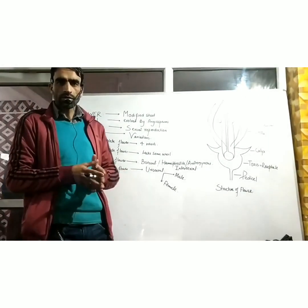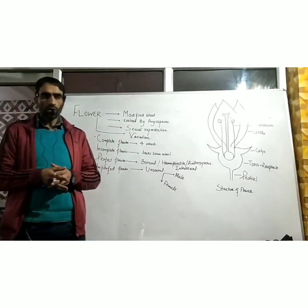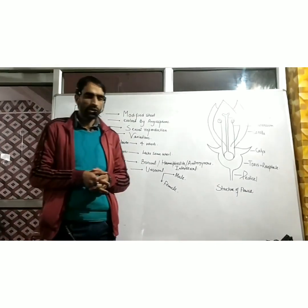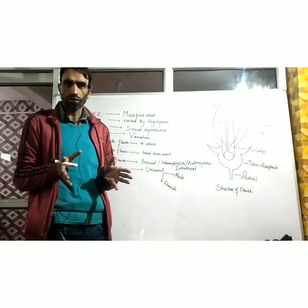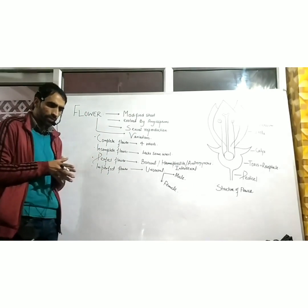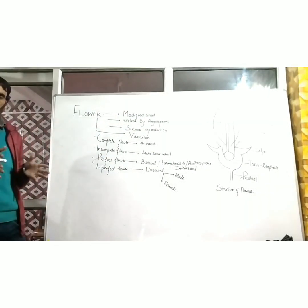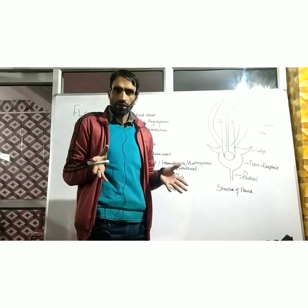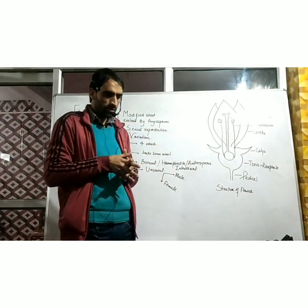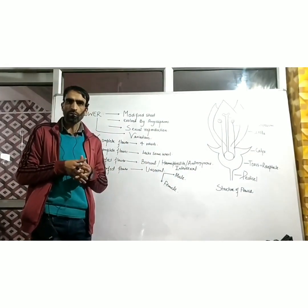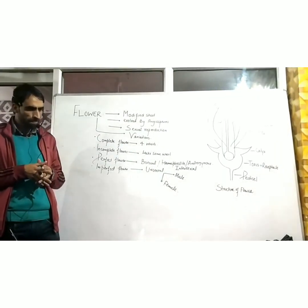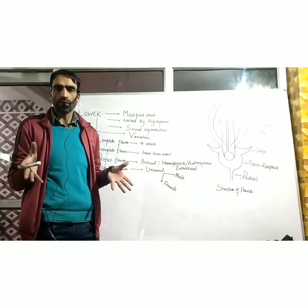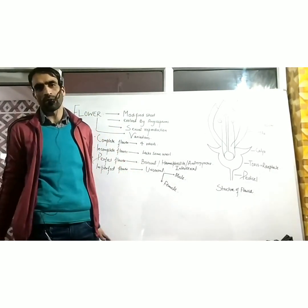Dear students, our normal class topic was reproduction in angiosperms. We covered what is the biological process in which an organism multiplies and procreates — this was called as reproduction. We also discussed that reproduction is of two types: asexual mode of reproduction and sexual mode of reproduction.